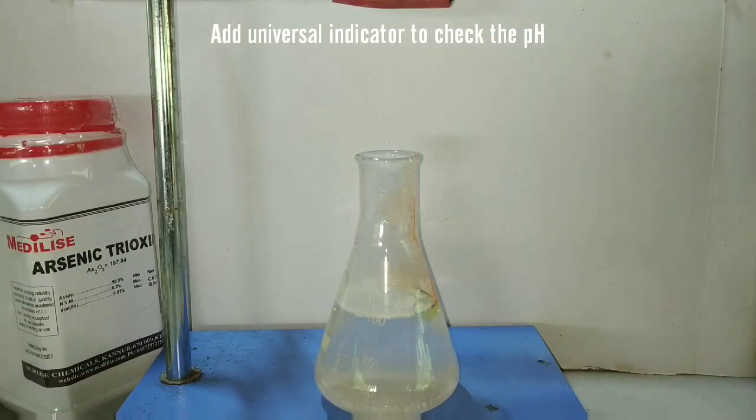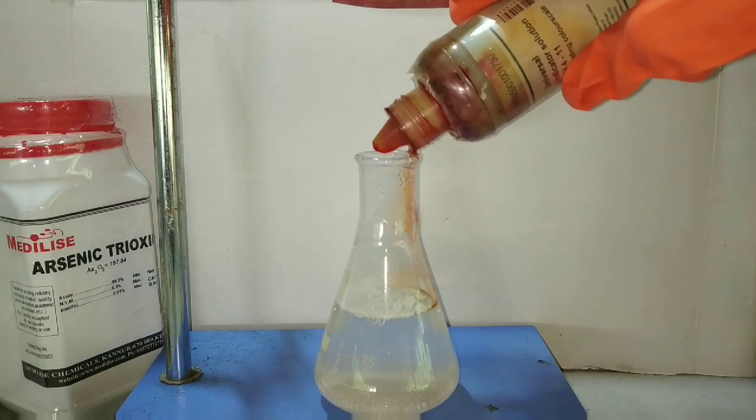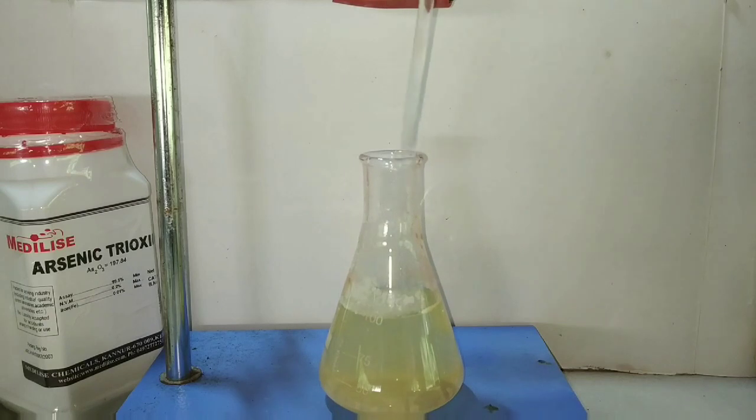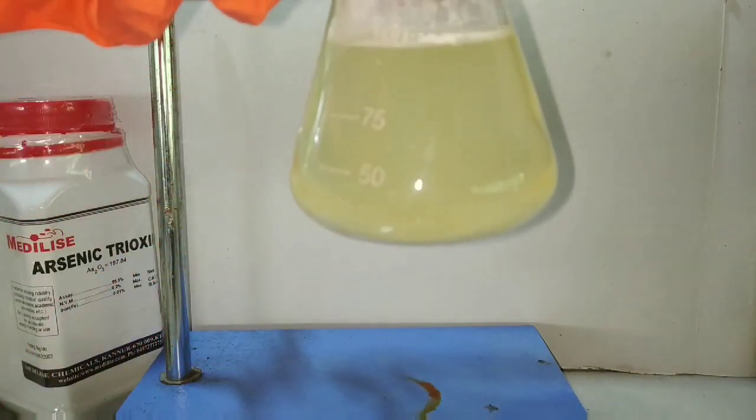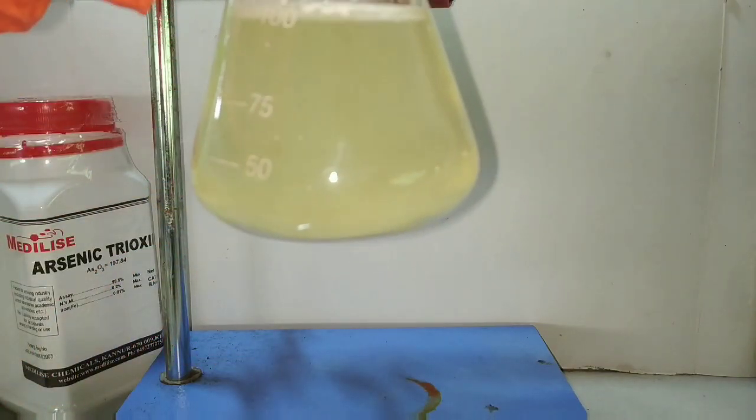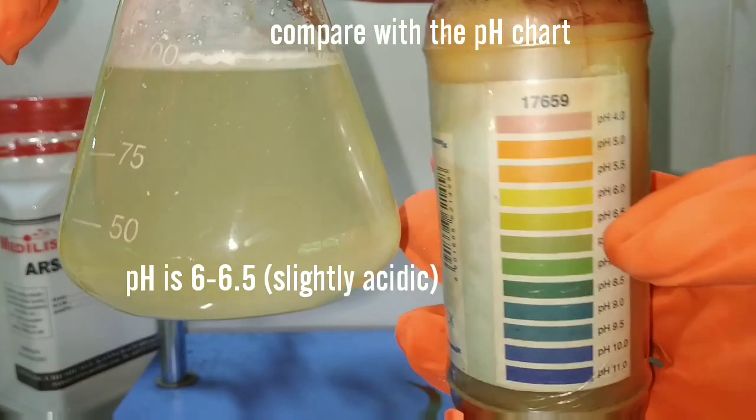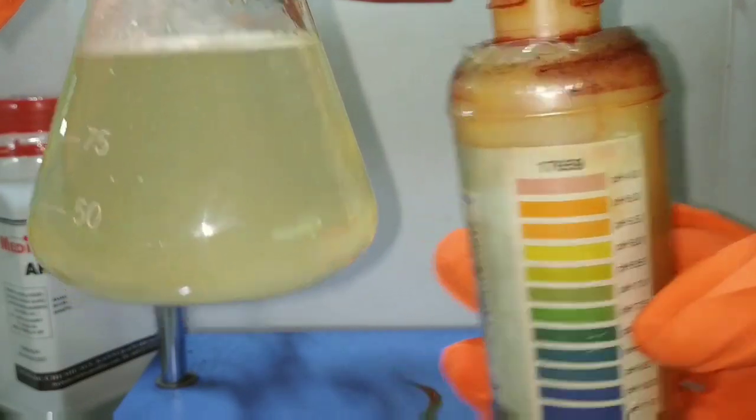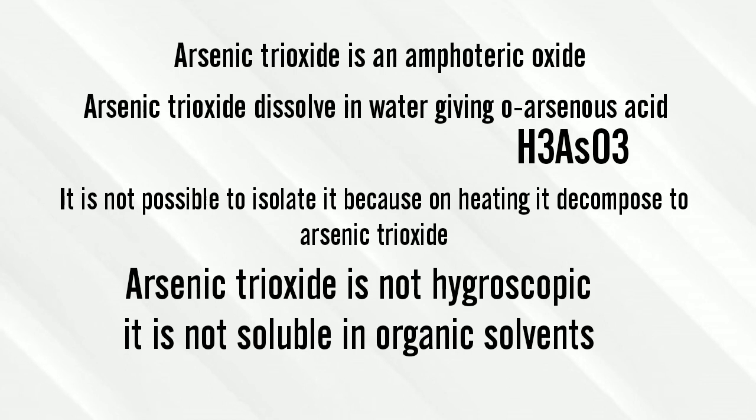Now we would check the pH of the solution. On adding the universal indicator solution it has turned to a yellow color. Now we will compare the color with the color chart on the universal indicator solution. On comparing, you can see that the solution is slightly acidic. Arsenic trioxide is an amphoteric oxide, hence it dissolved in water giving orthoarsenic acid.